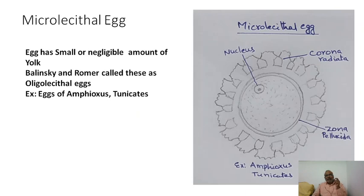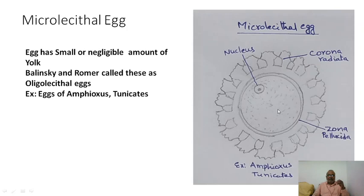Microlecithal eggs contain a very small amount of yolk. Examples include amphioxus and certain tunicates. The egg is surrounded by zona pellucida, corona radiata, and other layers. These eggs have a small or negligible amount of yolk, and are also called oligolecithal eggs by Balinski and Robe.